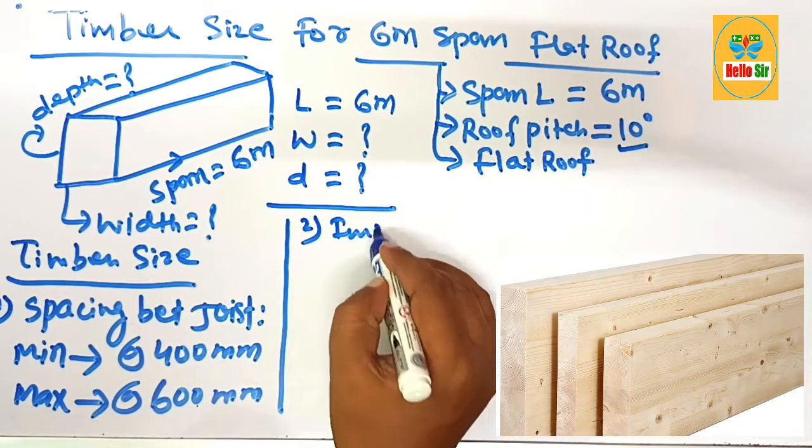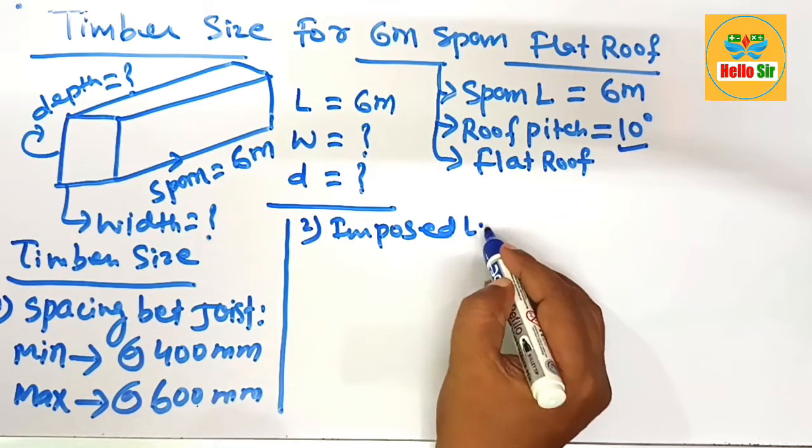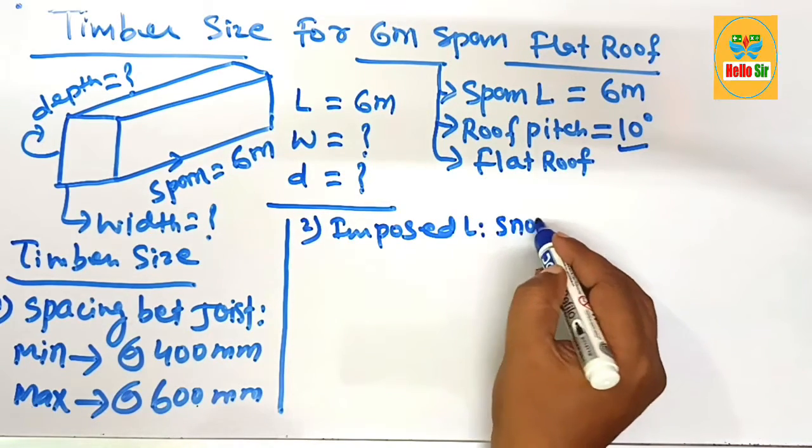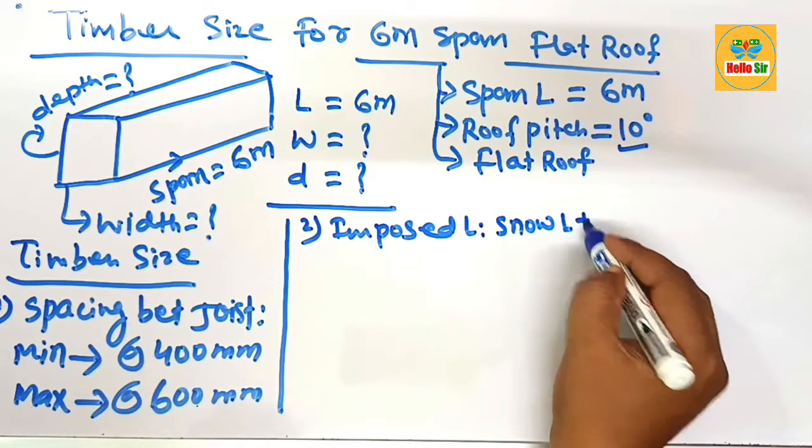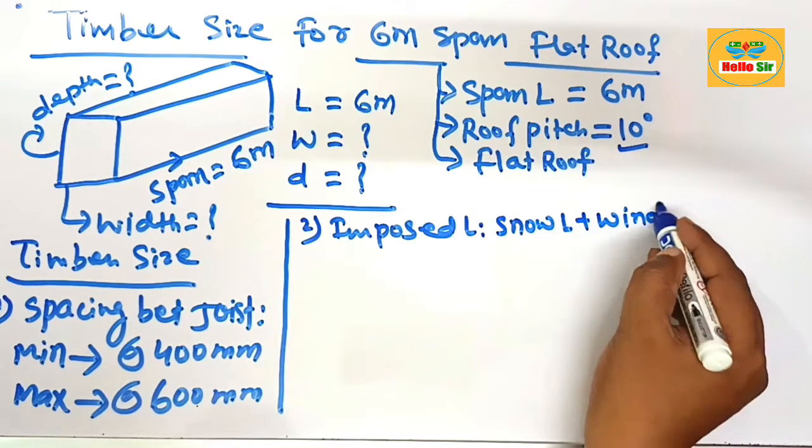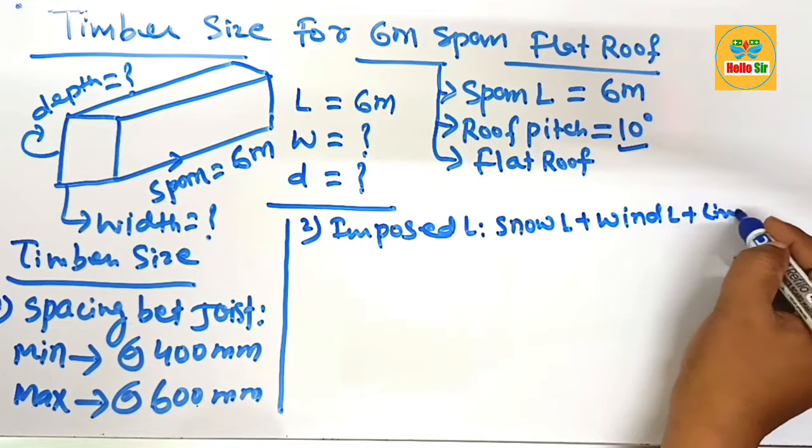And the second major factor that is imposed load. What will be imposed load? The load of snow load, this consists of snow load, wind activity and the life load of a structure. This is your imposed load acting on the roof.